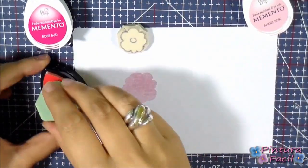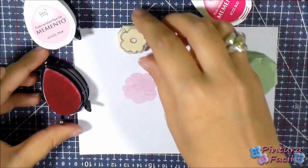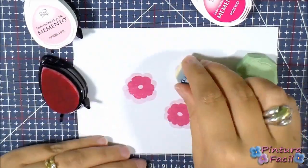Stamp first with the biggest flower and a light color ink. And then, stamp with the smallest flower and a darker ink.